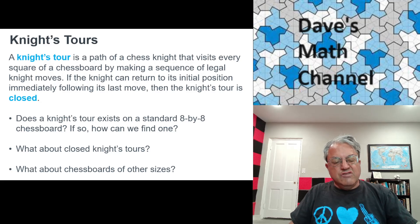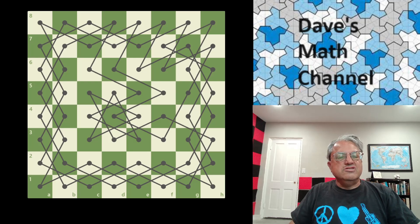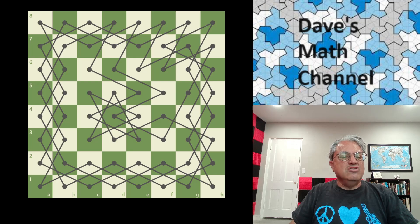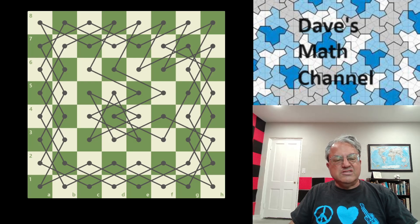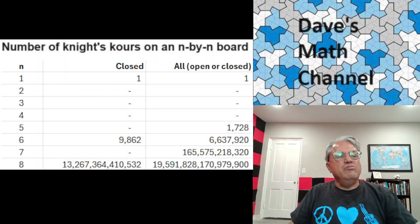On the cover slide I showed you an example of one. The answer is yes, there are knight's tours. As a matter of fact, the picture shows a closed knight's tour. So not only are there knight's tours, but there are closed knight's tours. The next question becomes how many of them are there and how can we find them? Let's first talk about how many of them there are — there's a lot.